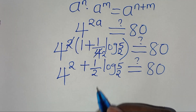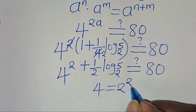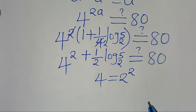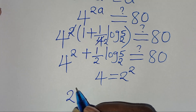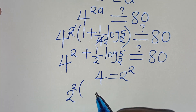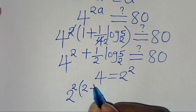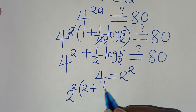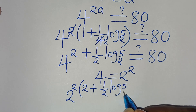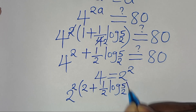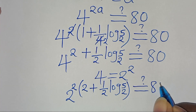The next step is to express 4 as 2 to the power of 2. Therefore we have 2 to the power of 2, raised to the power of (2 plus one-half·log₂5), and this should give us a value of 80.